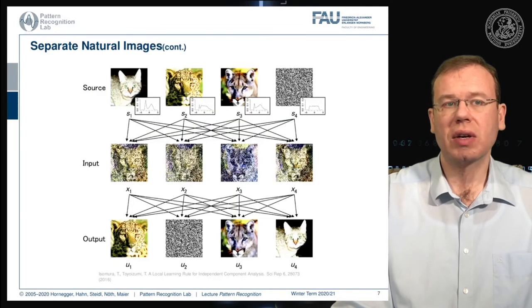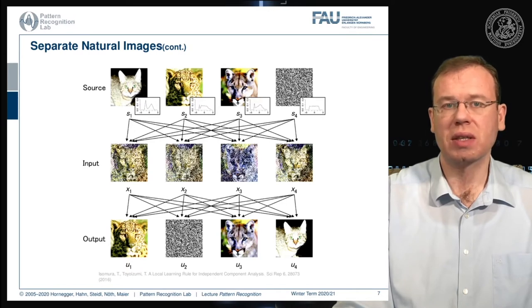So let's look into the separation of natural images. Here you see that we have four different sources. So it not just works with two sources, but you can also just increase the size of the mixing matrix. And then let's look at a total of four sources. Then you mix them somehow with the input to our independent component analysis. You can see that essentially we are close to not be able to recognize anything on those pictures. And then we perform the independent component analysis.